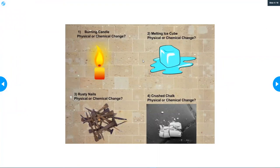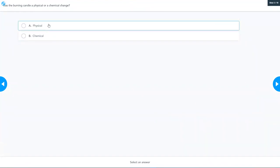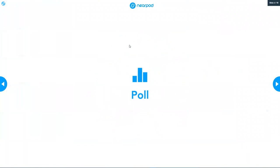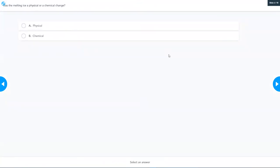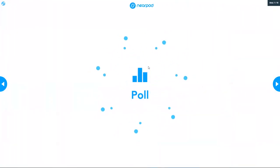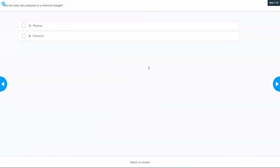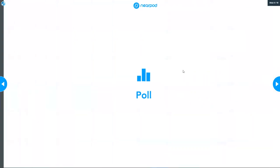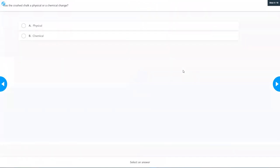We're going to discuss whether or not these are chemical or physical changes. You've got a burning candle, melting ice cube, a rusty nail, crushed chalk. On the poll, you're going to tell me which one is which. Is the burning candle a chemical or a physical change? Is the melting ice a physical or a chemical change? Was the rusty nail a physical or a chemical change? Was the crushed chalk a physical or a chemical change? In the live session, we discussed whether or not they were physical or chemical. If you need to know and you're not in the live session, you can Google search it.